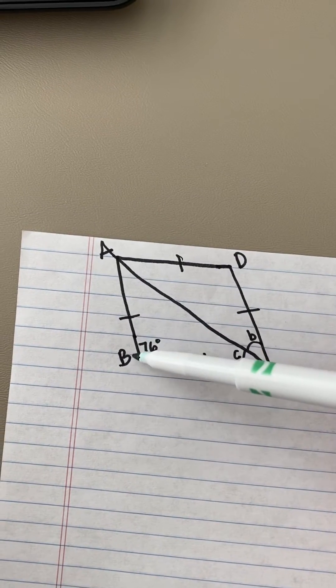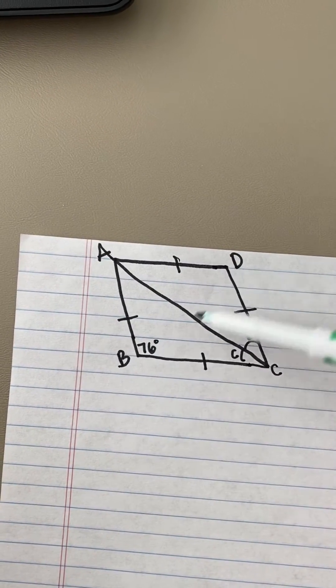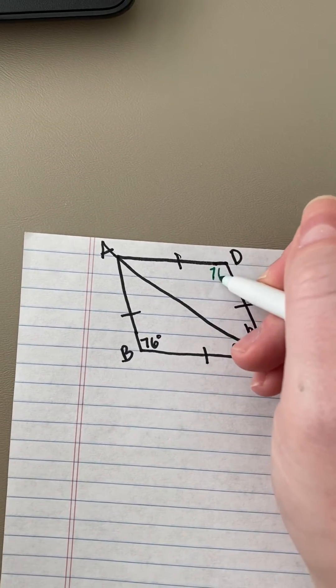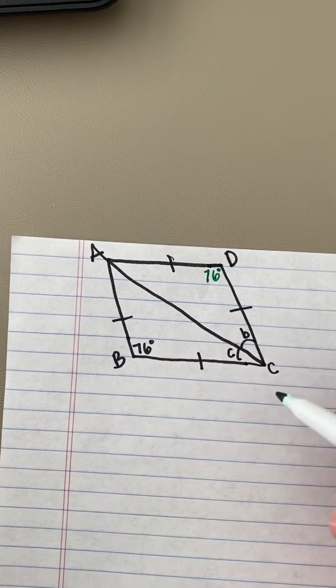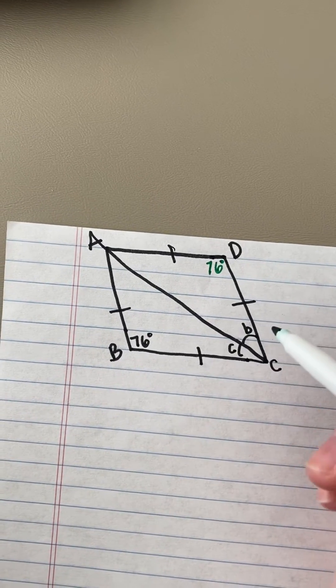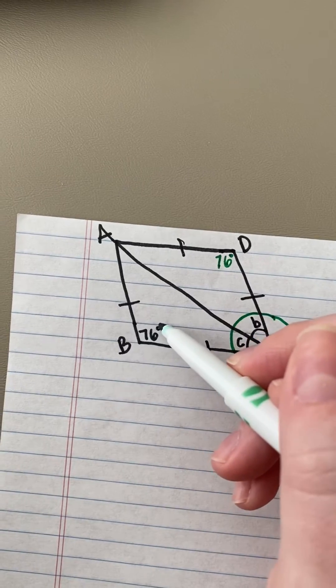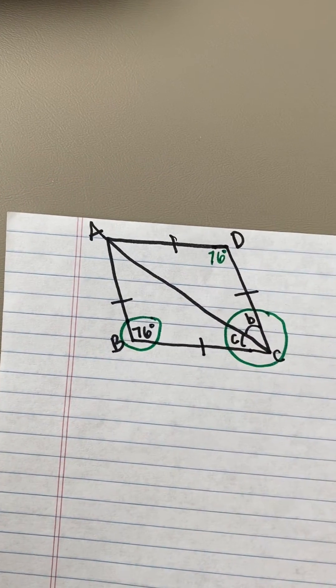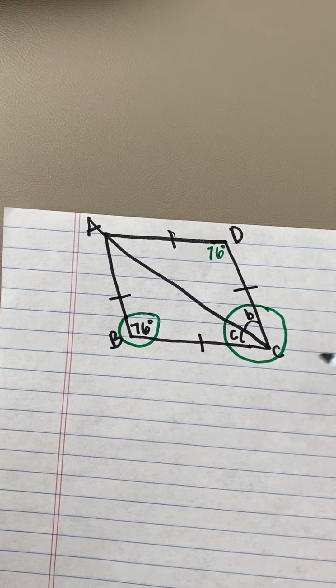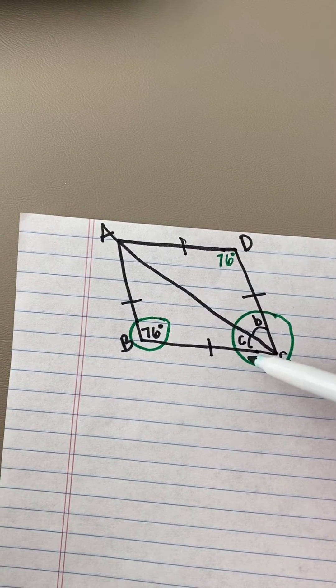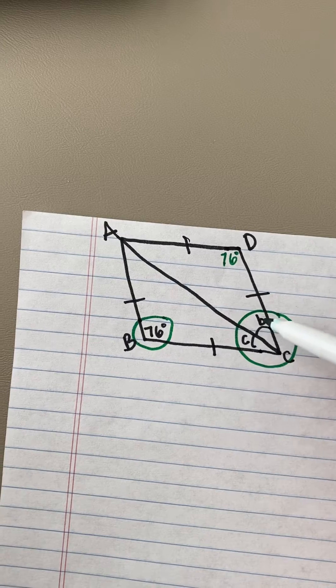So if we know opposite angles are congruent, that tells us angle D is equal to 76 degrees, and then the sum of angle C and angle B equals 180 degrees. And here we have angle C is made up of two equal angles, B and C.